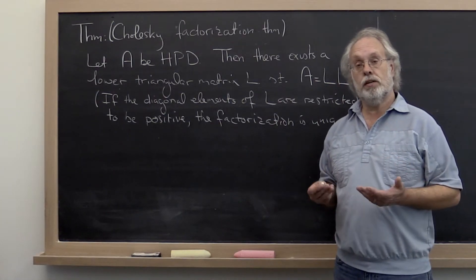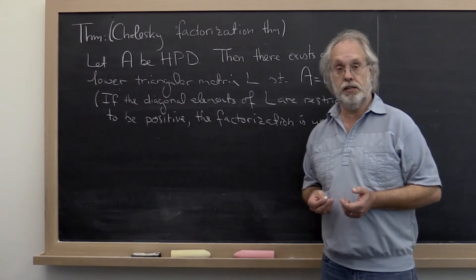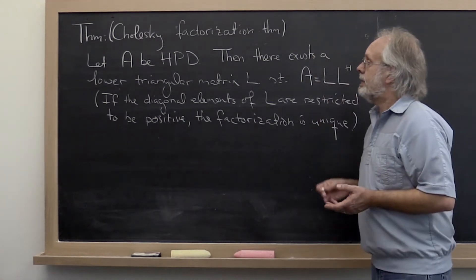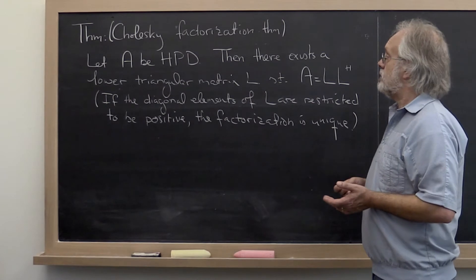Now that we understand what a Hermitian positive definite matrix is, we can move on and state the Cholesky factorization theorem.